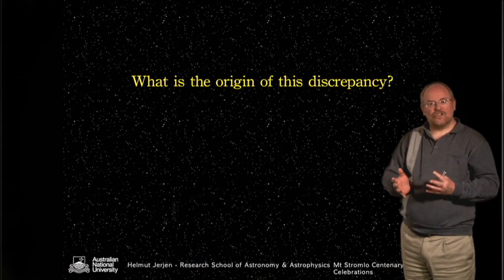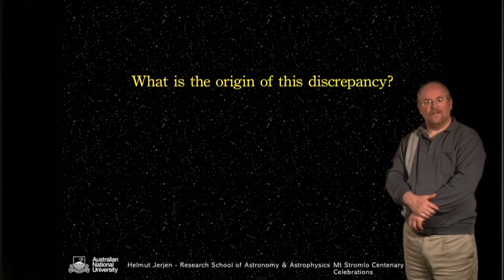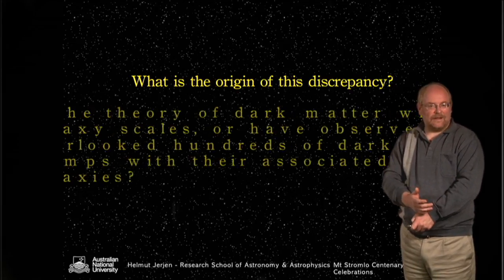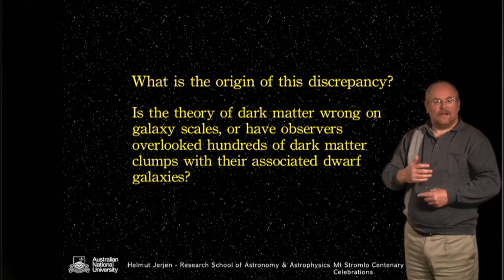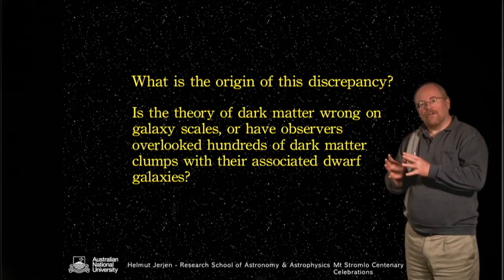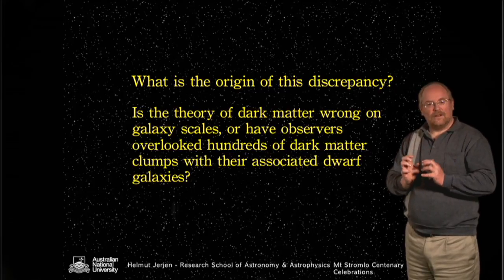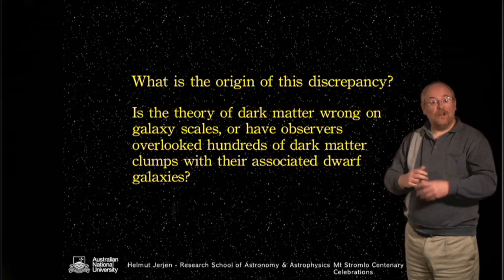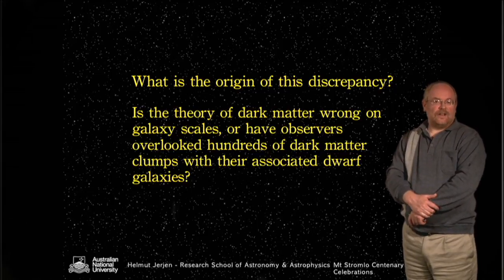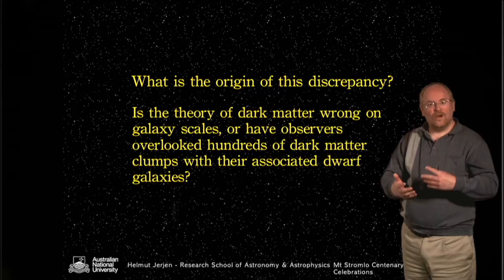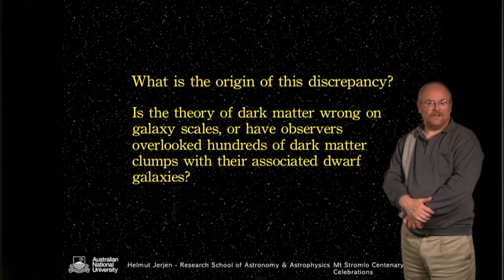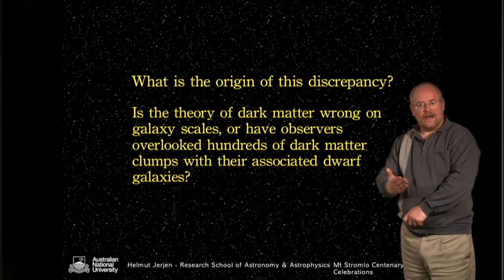The fundamental question we are trying to answer today is: what is the origin of this discrepancy? There are two possibilities: is the theory of dark matter incorrect on galaxy scale, or have observers simply overlooked hundreds of these dark matter clumps with their associated dwarf galaxies? These are the two fundamental possibilities to explain the discrepancy between the models and the observations.